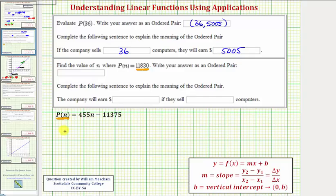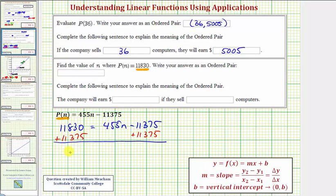So this would give us the equation 11,830 equals 455n minus 11,375. We have our basic two-step equation, so we'll add 11,375 to both sides. So we have 23,205 is equal to 455n, and this would be zero.